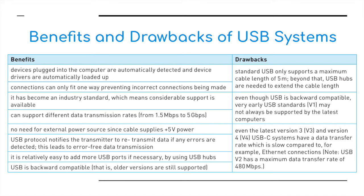Additional benefits include it being relatively easy to add more USB ports using USB hubs, and USB is backward compatible — meaning older versions are still supported. On the drawback side, standard USB only supports a maximum cable length of 5 meters; beyond that, USB hubs are needed. Even though USB is backward compatible, very early USB standards such as version 1 may not always be supported by the latest computers, such as the new MacBook Air.